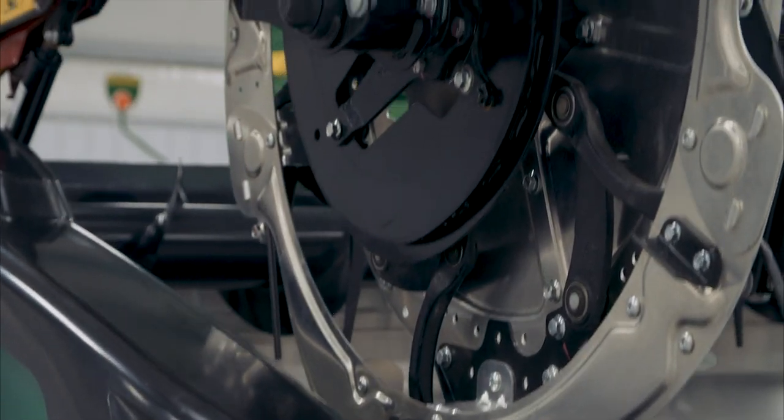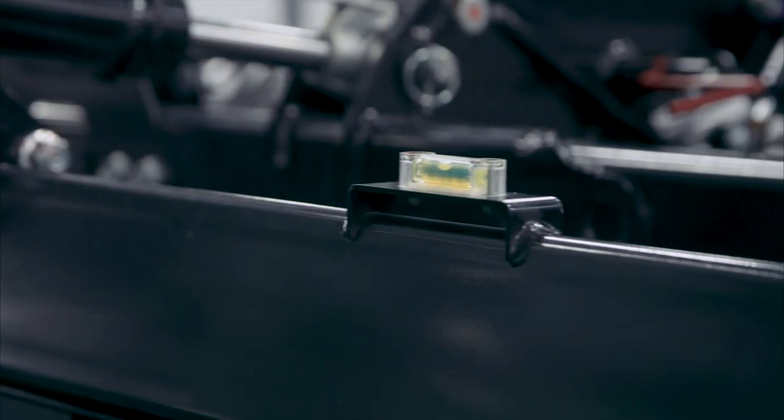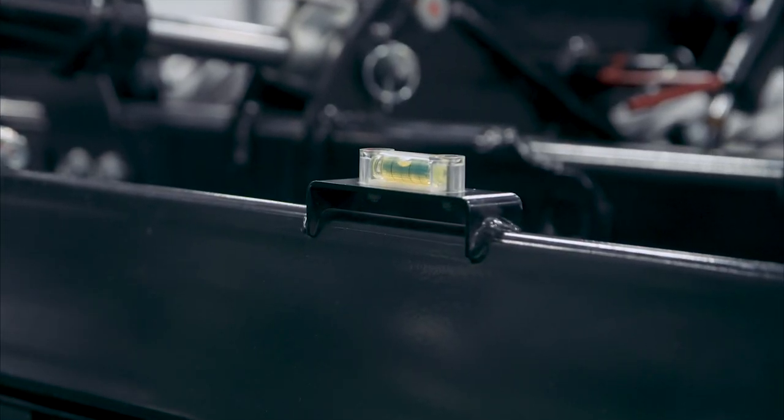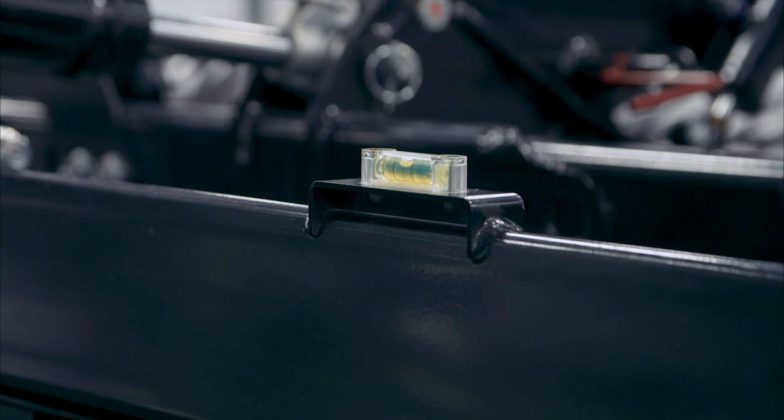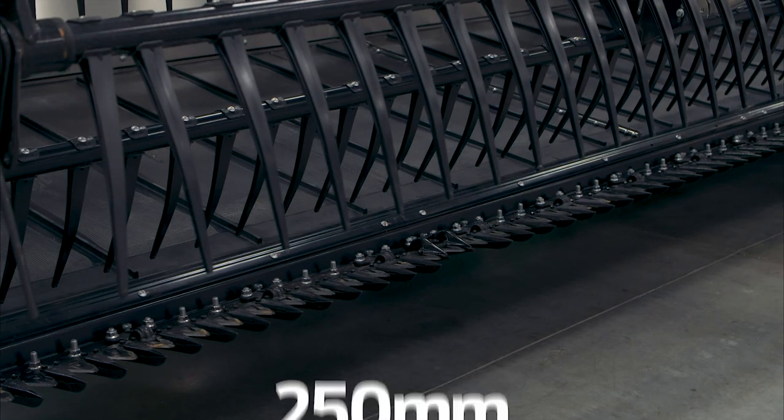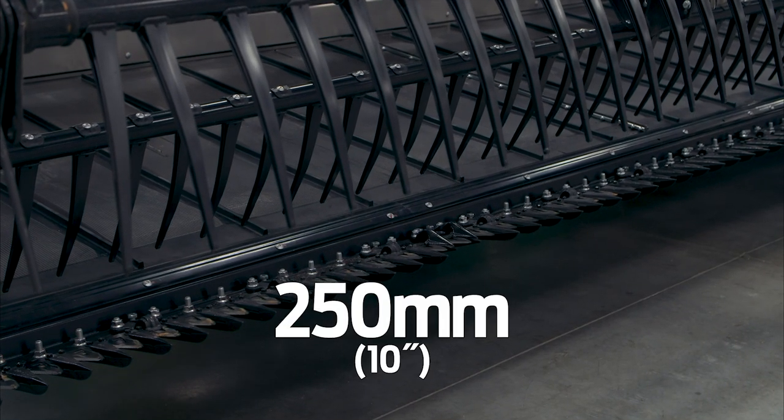Park the combine on a level surface and ensure the combine feeder house is level. Use the bubble level on top of the float module. Adjust the header so the cutter bar is 250mm off the ground.